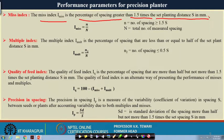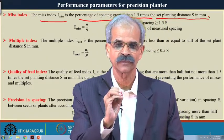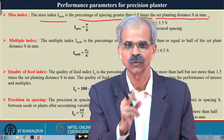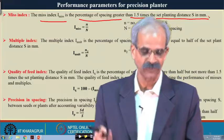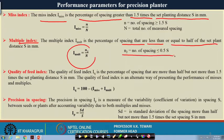The multiple index: we are talking of precision planting — we want exactly the required amount, whether seed or fertilizer. We do not want zero at some point and we do not want multiple seeds when we want one. Multiple index is the percentage of spacing that is less than or equal to half of the set planting distance, meaning multiple seeds are falling too close together.